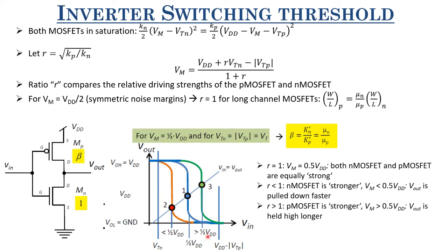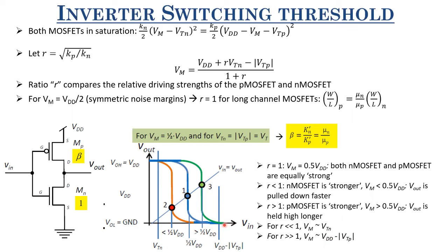You can shift VM by adjusting R (i.e., the W/L ratio). If R is very small, the NMOS is very strong and pulls VM close to Vth_N — it cannot go below that because the slope becomes zero. If R is very large, the PMOS is very strong and pulls VM close to Vdd - |Vth_P| — it cannot exceed that either. So VM is bounded between Vth_N and Vdd - |Vth_P|.